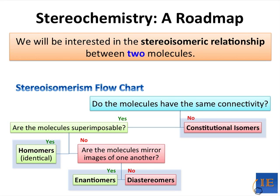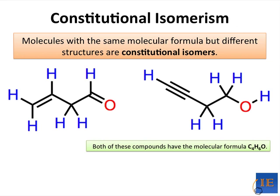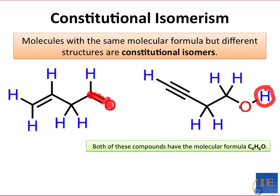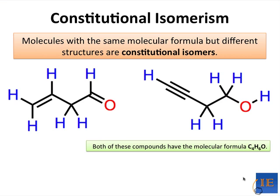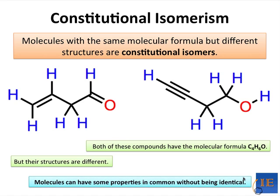That order is from most similar to least similar. Molecules that have the same formula but different structures are called constitutional isomers. Take a look at the two molecules here. In the molecule on the left, there's a double bond between C and O, and the oxygen is bound to just one carbon. However, on the right-hand side, this oxygen is bound to a hydrogen and has a single bond to its carbon. You might think these molecules are completely different, but they both have identical molecular formulas: C4H6O. So they are identical in the property of molecular formula, but their structures are different.